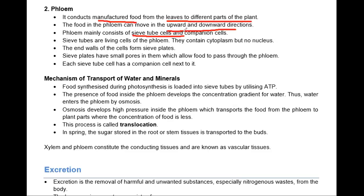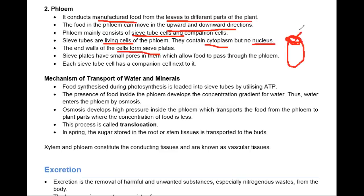All the xylem cells are dead cells — xylem is thick, and therefore the plant is upright. But on the other hand, the phloem has all living tissues. The sieve tubes and companion cells are all living cells of phloem. They contain cytoplasm but no nucleus. The walls of the cells form the sieve plates, which have small pores on them.